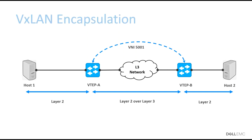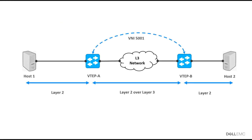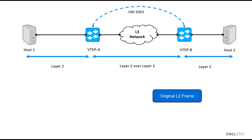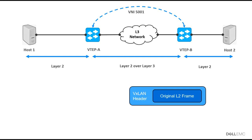Let's go deeper into how VXLAN encapsulation happens. Host 1 wants to send packets to Host 2; they belong to the same VLAN but there's a Layer 3 network in the middle. Host 1 constructs a normal Layer 2 frame and sends it to VTEP A. VTEP A encapsulates it inside a VXLAN header. Between VTEP A and VTEP B we have what we call the overlay — essentially a tunnel between the two VTEPs.